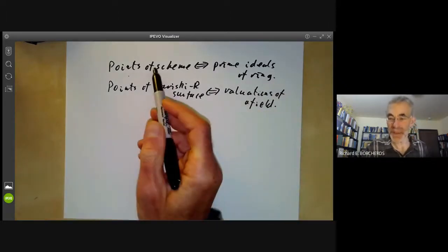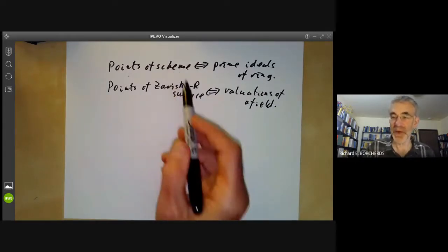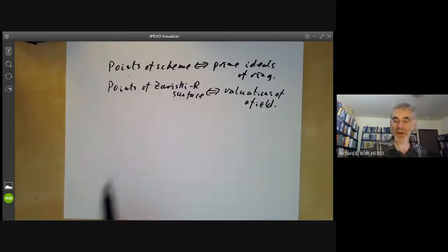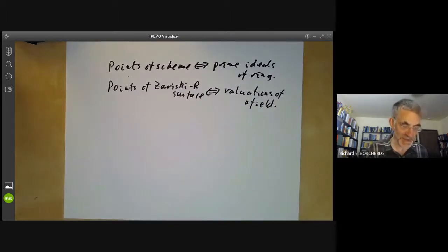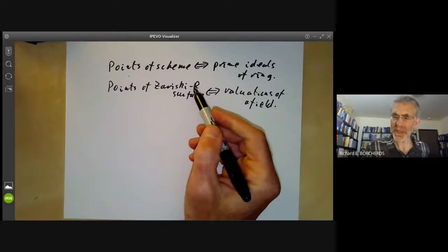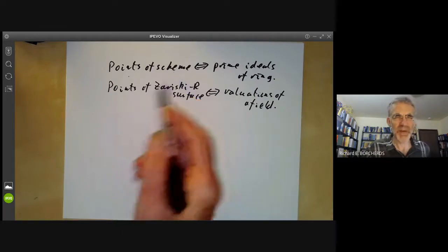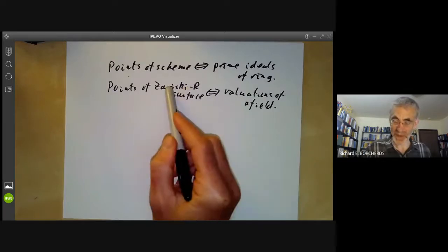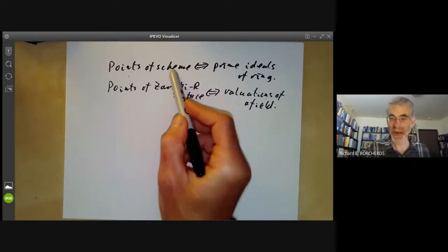And there are a lot of similarities between schemes and Zariski Riemann surfaces. First of all, you can put a topology on both of them, which in both cases is called the Zariski topology and is kind of similar. Next, you can put the structure of a ring space on both of them. So these things can be thought of as geometric objects. They're kind of locally ringed spaces. Zariski Riemann surfaces may have actually inspired Grothendieck's definition of a scheme. There were several ideas floating around in the 1950s when Grothendieck defined schemes that were kind of a little bit similar to schemes. And Zariski's concept of the Zariski Riemann surface was one of them. So you can think of Zariski Riemann surfaces as being sort of parents of schemes.